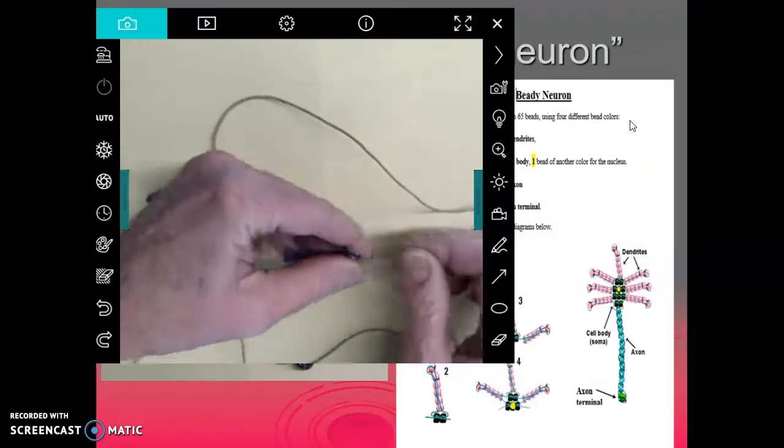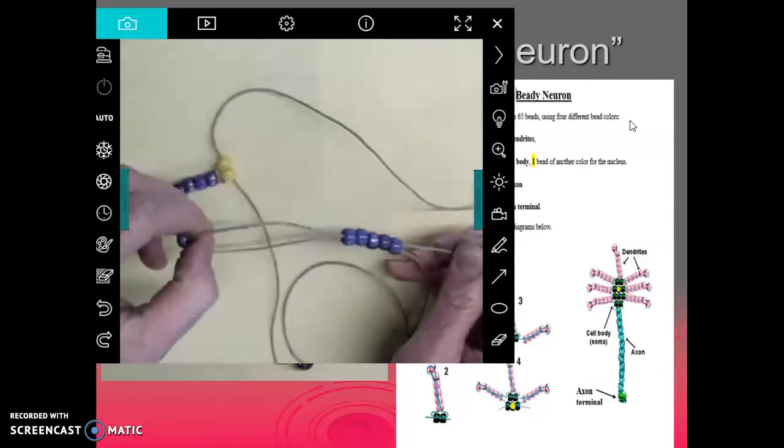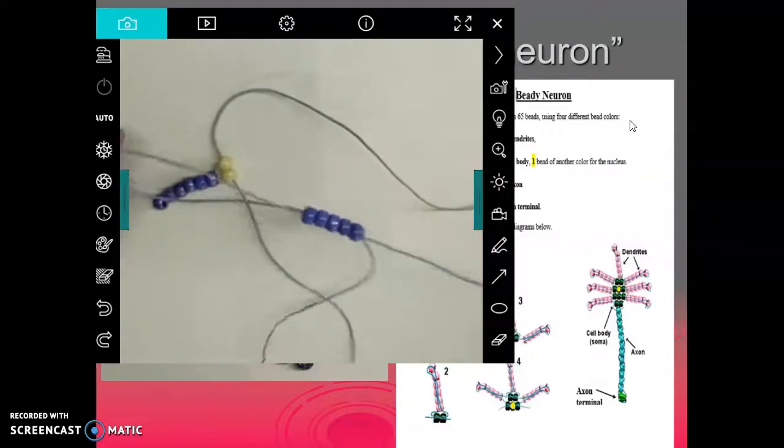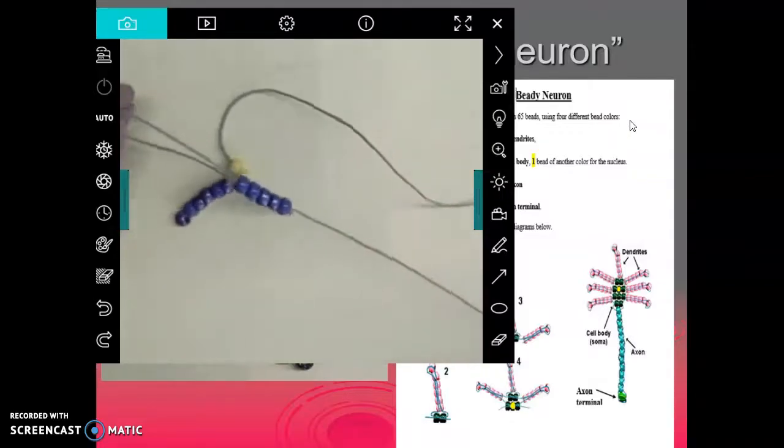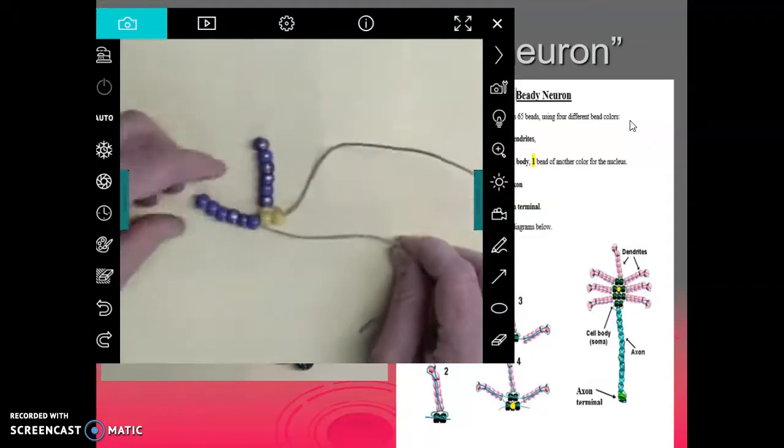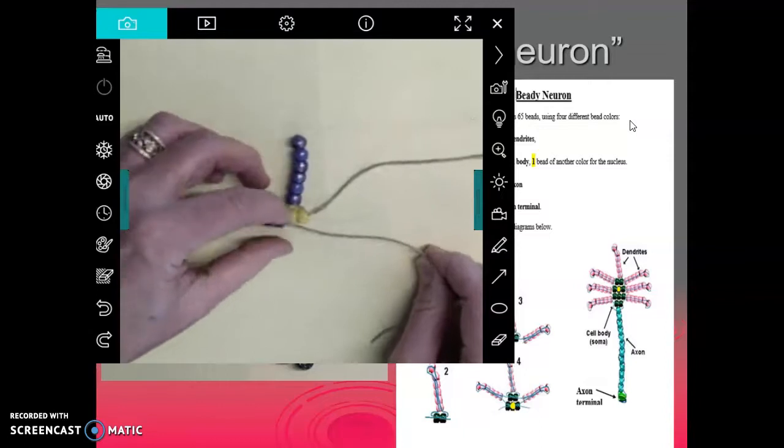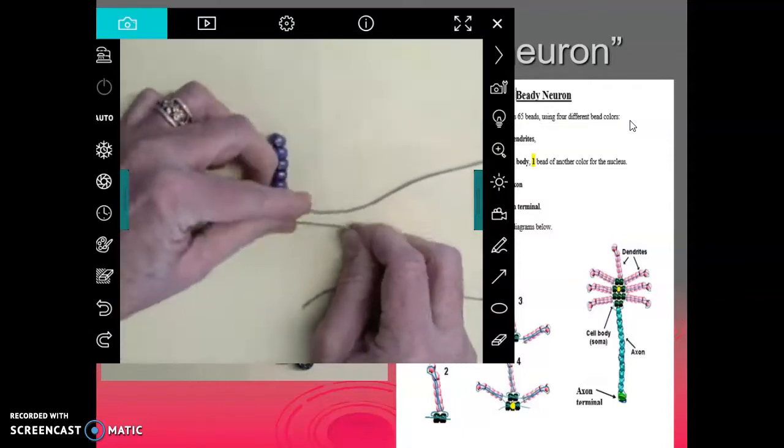And then what you're going to do is you're going to snug this all the way down to here. So the way to do that is to pull on the end and let the string flow through until it gets all the way down to the end like this. And then tighten it up, pulling from the end, tighten it up until you get it all the way down to the end where you want it to be.